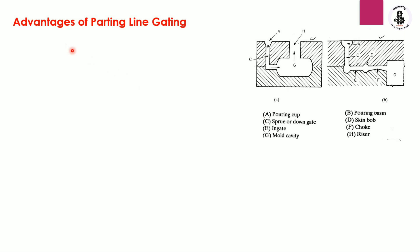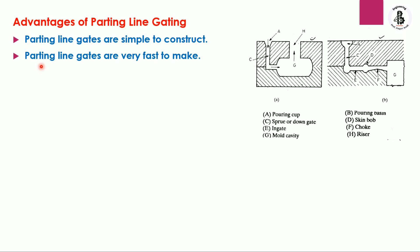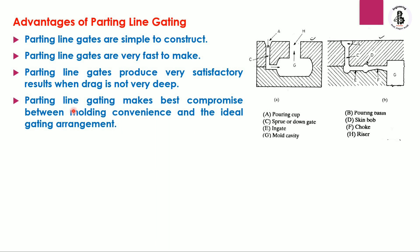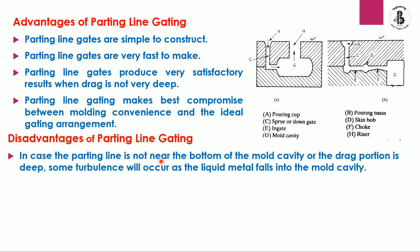The advantages of the parting line gating system include: first, parting line gates are simple to construct — sand molds can easily be made. Second, they are very fast to make. Third, they provide very satisfactory results when the drag is not very deep. Fourth, they make the best compromise between molding convenience and the ideal gating arrangement. A disadvantage is that if the parting line is not near the bottom of the mold cavity, or if the drag portion is deep, some turbulence occurs as liquid metal falls into the mold cavity, causing erosion or damage to the mold cavity.